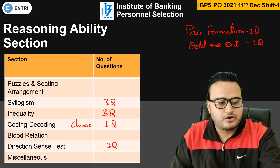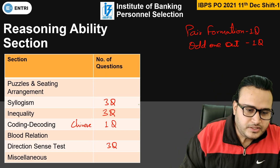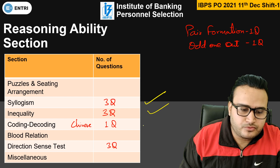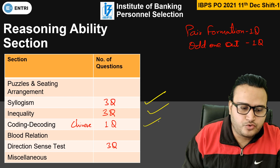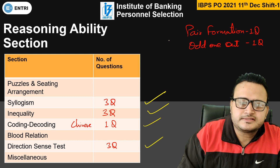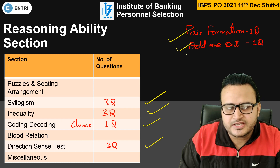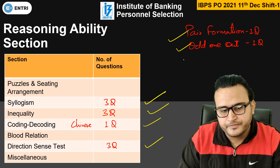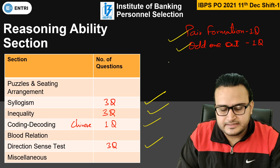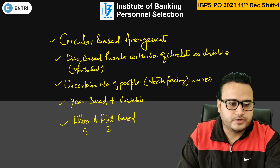Now let's talk about the Reasoning Ability section. There were 3 questions from locks, 3 questions from inequality, 1 question from Chinese coding, 3 questions from direction, 3 pair formation questions, and 1 odd-one-out classification question. Please let me know if there's any correction in the analysis — this is what I got from the students only.